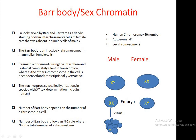The number of Barr bodies depends on the number of X chromosomes present in a cell. The number of Barr bodies follows an n-1 rule, where n is the total number of X chromosomes.